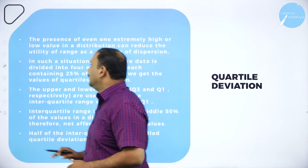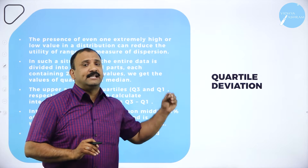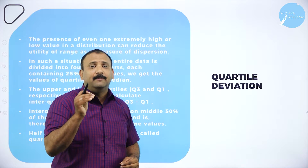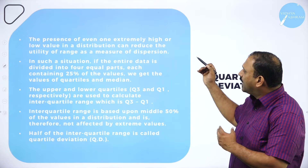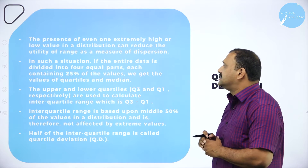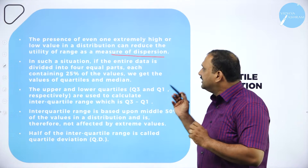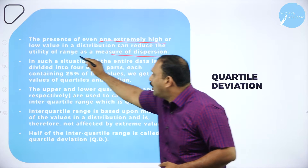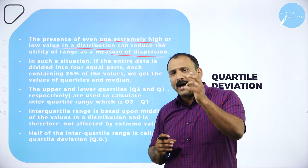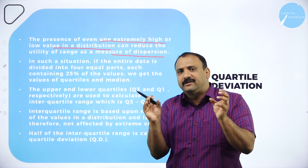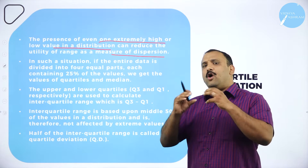Now we come to a very important concept: quartile deviation. The word quartile means in quarters, in values of four. The presence of even one extremely high or low value in a distribution can reduce the utility of range as a measure of dispersion. Normally, data follows a particular trend or pattern, either in ascending or descending order, but one extreme value can disturb the entire data set.